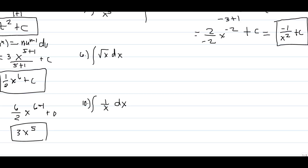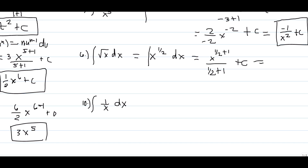Another example: the integral of the square root of x dx. We remove the radical symbol, so we have the integral of x to the power one-half dx. Applying the power formula, this equals x to the power one-half plus 1 over one-half plus 1 plus c, which gives x to the power 3 over 2, divided by 3 over 2, plus c. The final answer is 2 over 3 times the square root of x cubed plus c.